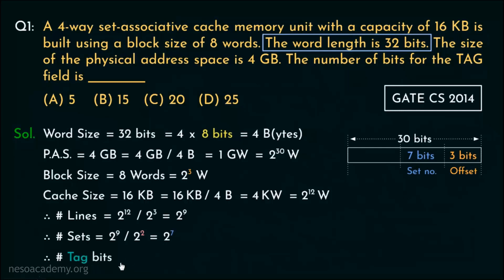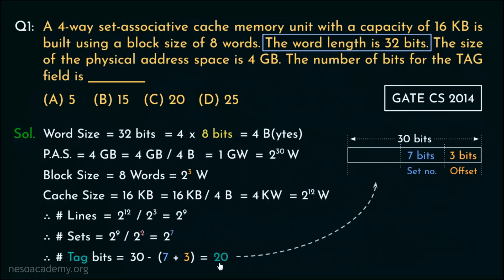The number of tag bits can be found by subtracting the set number bits and the offset bits from the physical address bits: 30 minus (7 plus 3), which is 10, giving us 20. Therefore, 20 bits will be used for tags. So option C is the correct choice — however, this is the correct derivation process, and this is the correct physical address bit split.